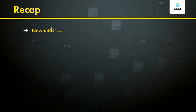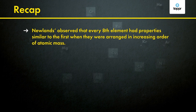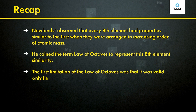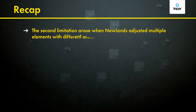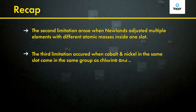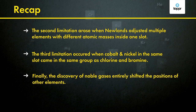Let's have a quick recap. Newlands observed that every eighth element had properties similar to the first when arranged in increasing order of atomic masses, and coined the term 'law of octaves.' The first limitation was that it was valid only till calcium. The second arose when Newlands adjusted multiple elements with different atomic masses into one slot. The third occurred when cobalt and nickel in the same slot came in the same group as chlorine and bromine. Finally, the discovery of noble gases entirely shifted the positions of other elements.